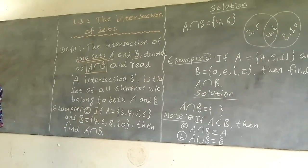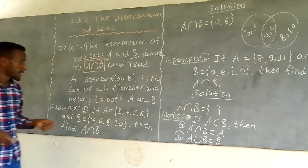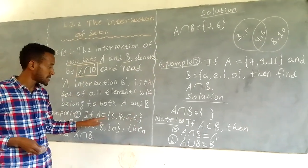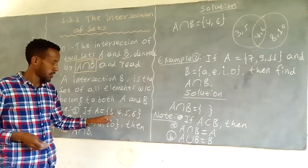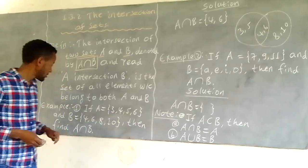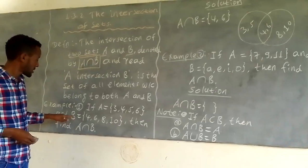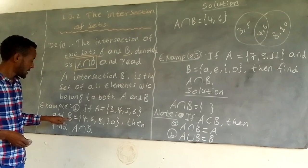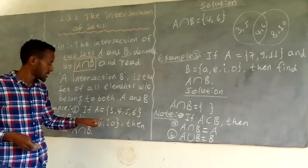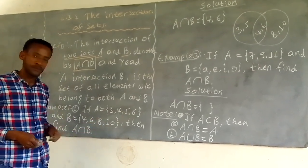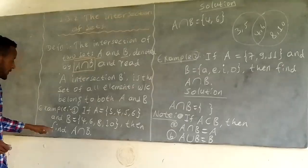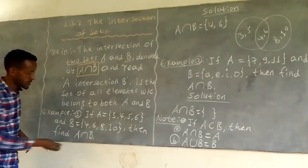Example one. If set A is the set {3, 4, 5, 6}, and set B is the set {4, 6, 8, 10}, then find A intersection B.